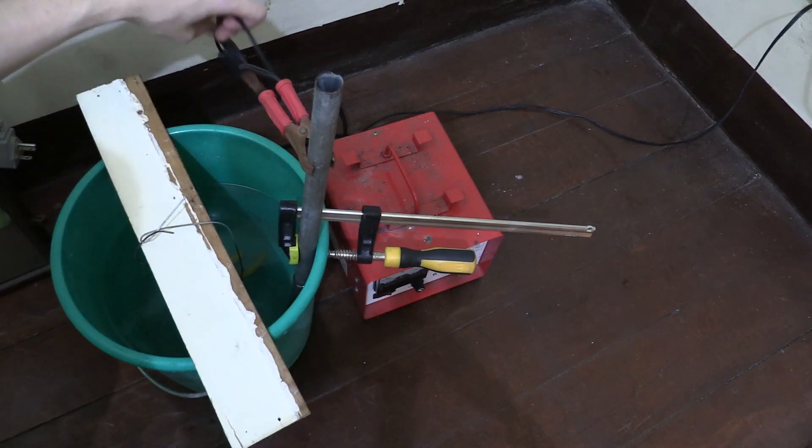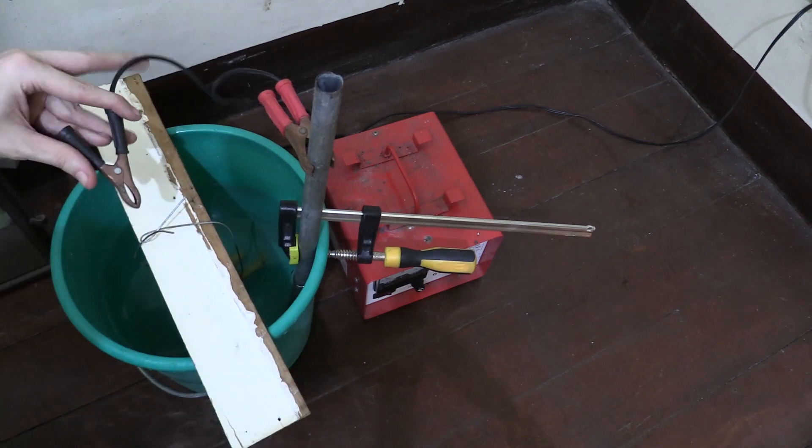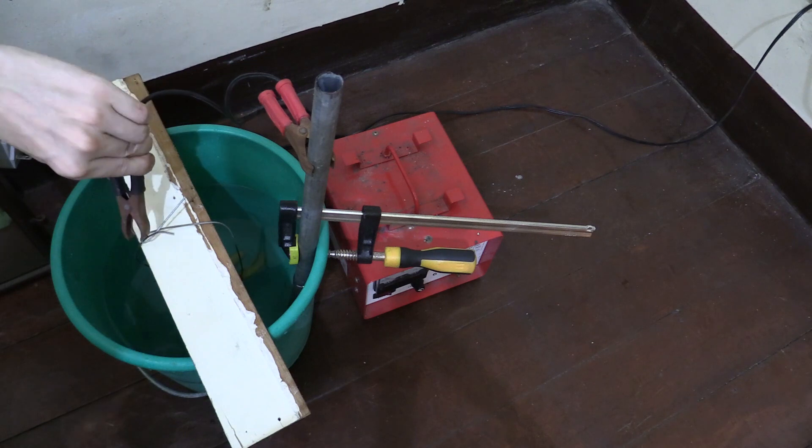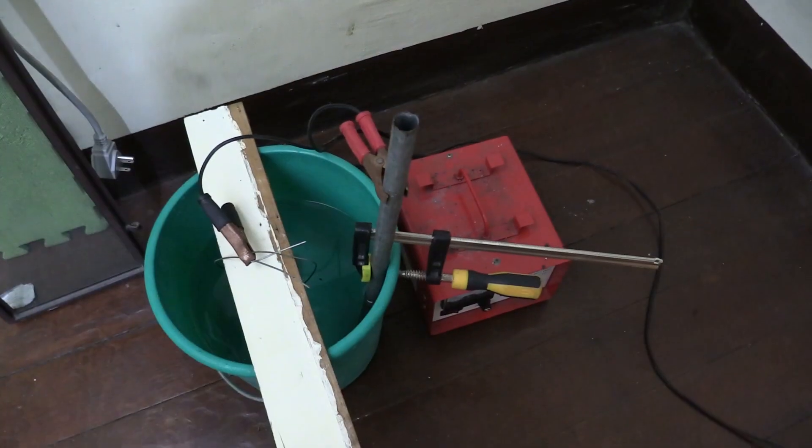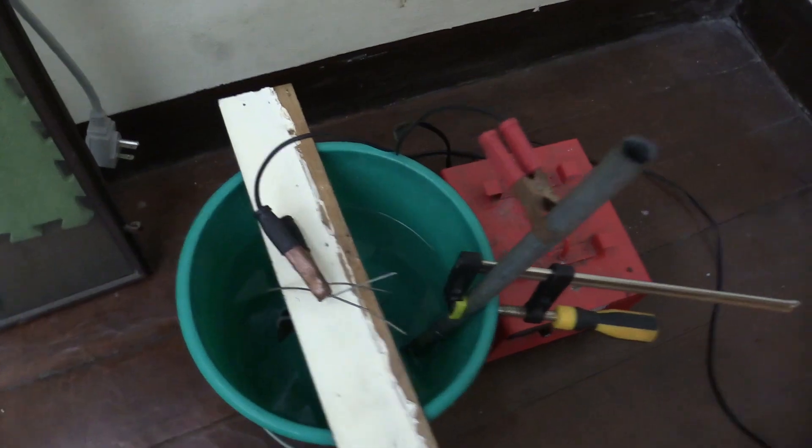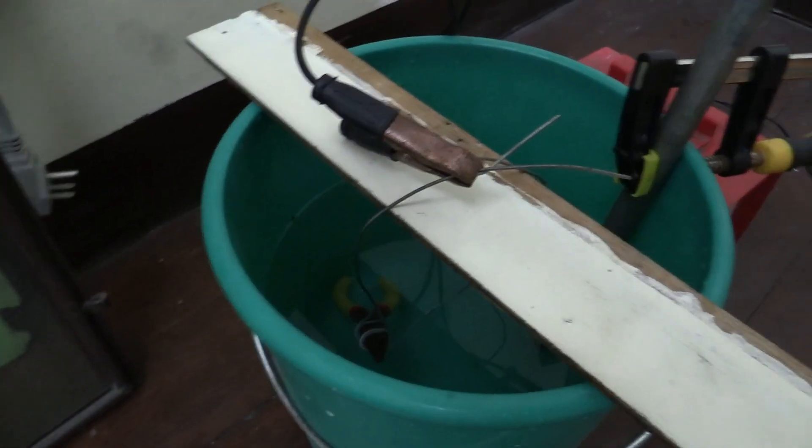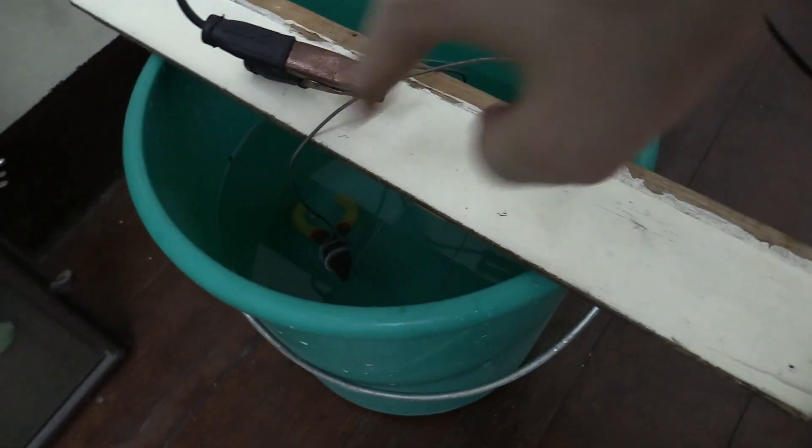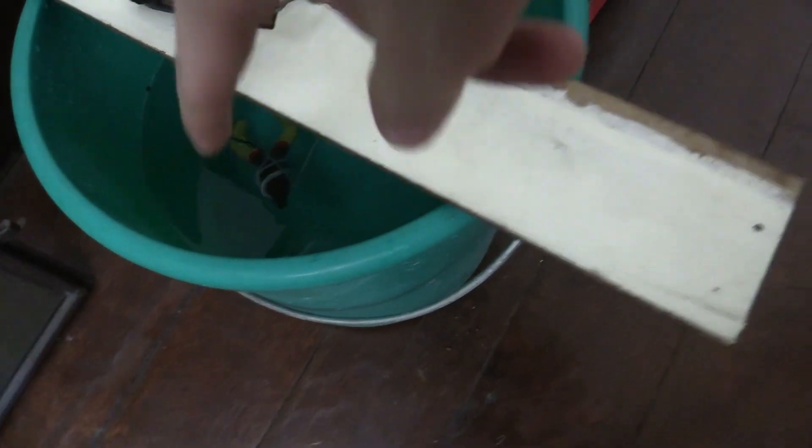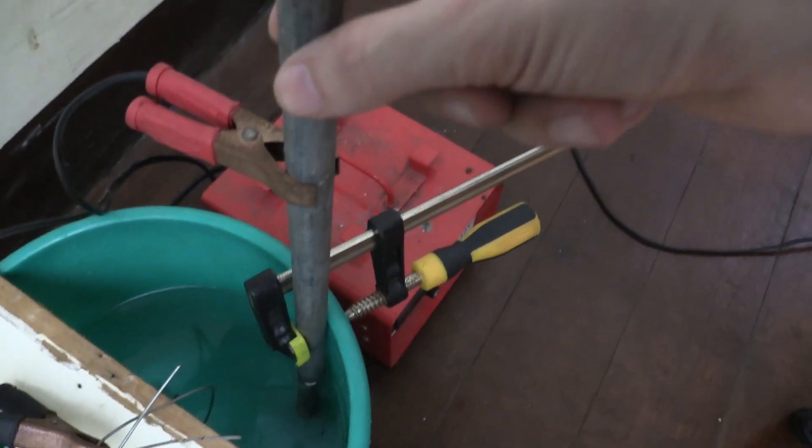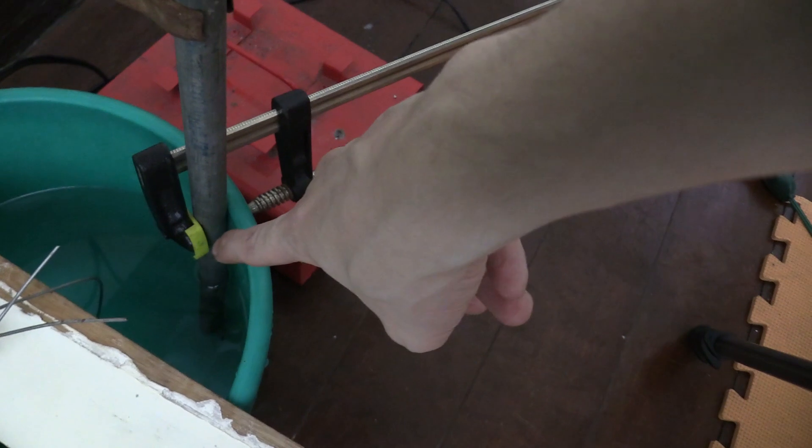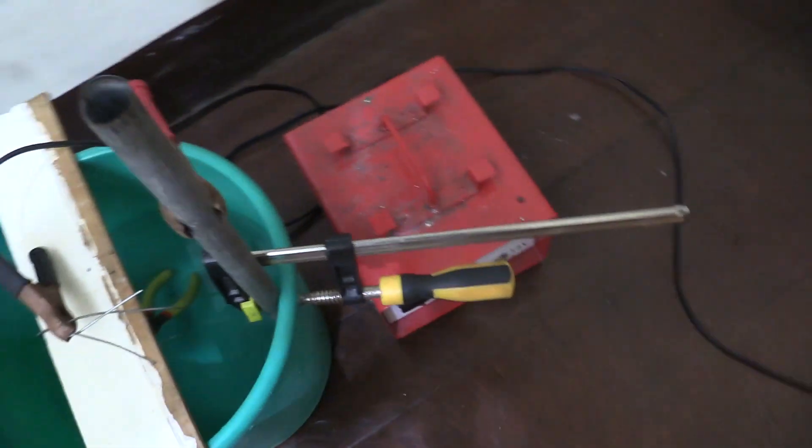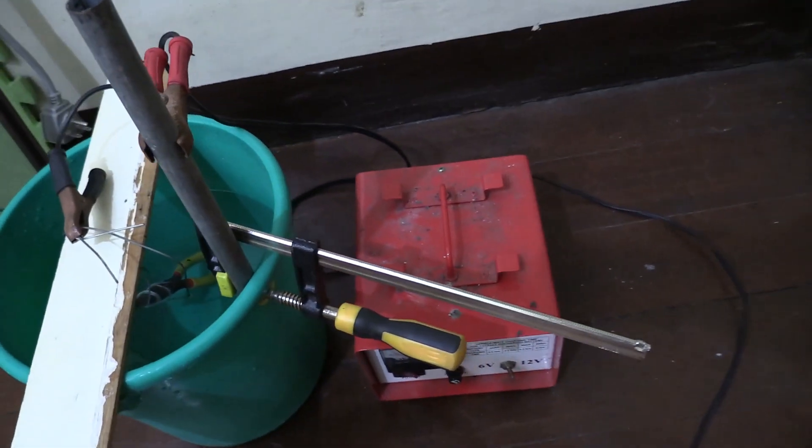I'll connect the negative side of my battery charger to this wire. Before I turn the battery charger on, let me show you inside the bucket. You can see the negative of the battery charger going to this wire which holds our tool in the water, and the positive side going to this steel bar clamped to the side of the bucket. That's pretty much it. Let's plug in our battery charger and turn it on.